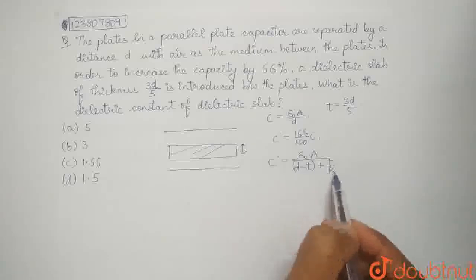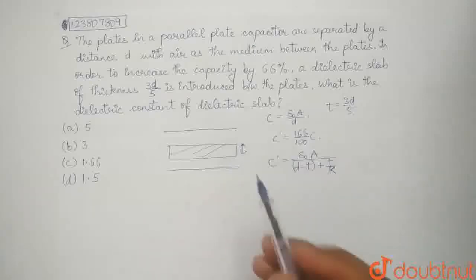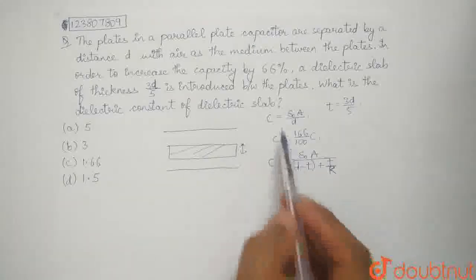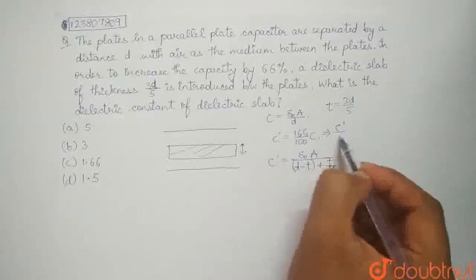Because this part has dielectric constant 1, plus t by k, where k is the dielectric constant of the newly introduced dielectric slab. Now, we have to equate them. This is c dash by c.